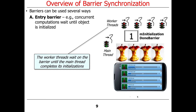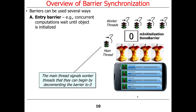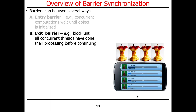The barrier might be called mInitializationDoneBarrier, and so everybody waits for the initialization to be done. When the initialization is finished, the count goes from 1 to 0, which is an indication to the worker threads that they can start doing their thing. When the main thread reaches the point where it wants to let the other threads run, it decrements the count, and then all of the other threads or parties can begin to do some work. That's an entry barrier.